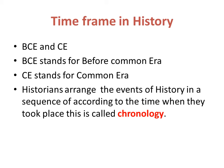Chronology means historians arrange the events of history in a sequence according to the time when they took place — this is called chronology. Historical events are graphically represented in a timeline.